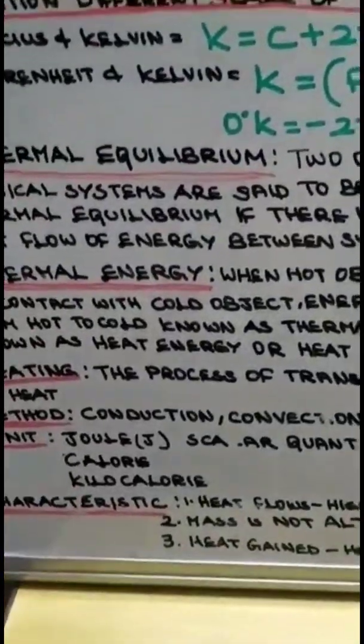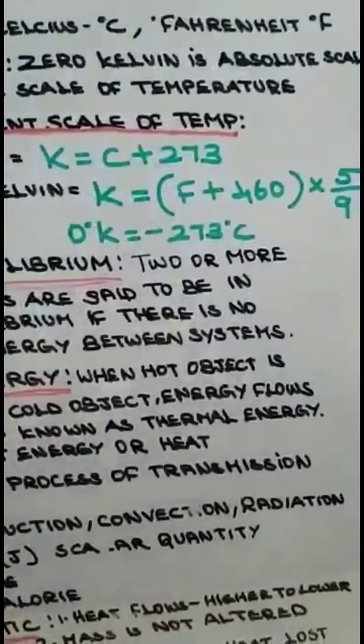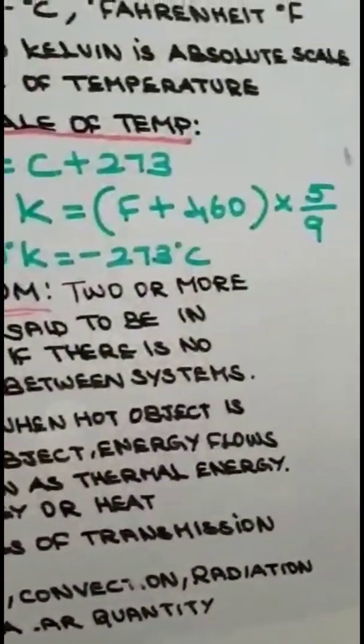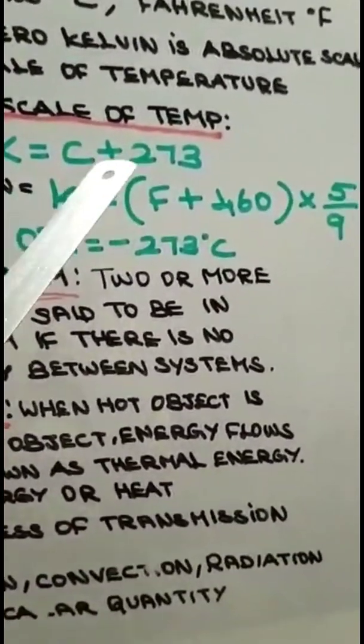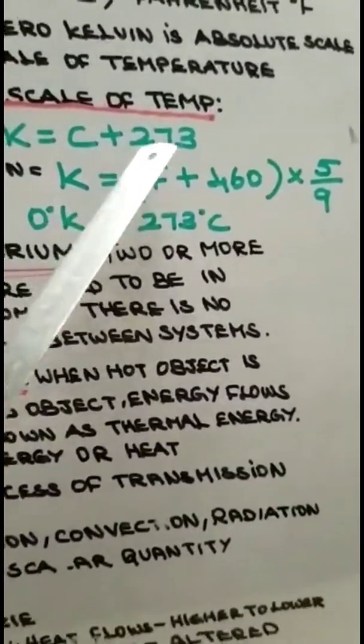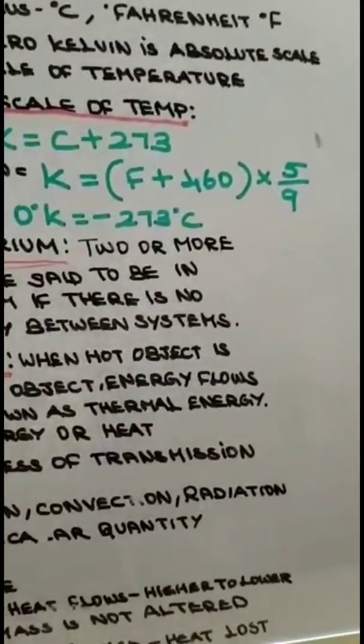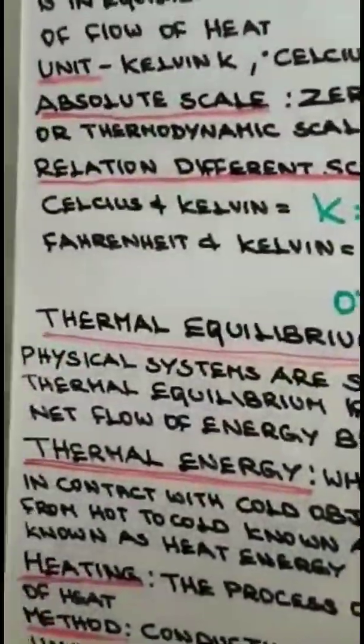For example, if 10 degree Celsius is given, how can we convert it into Kelvin? Kelvin equals 10 degree Celsius plus 273, that is 283 Kelvin. I think now you are clear. Again we will discuss about conversions of others also.